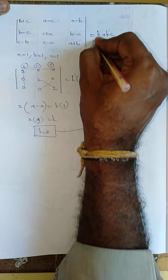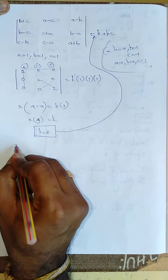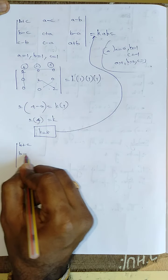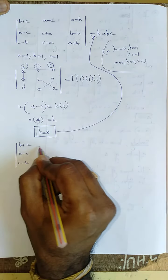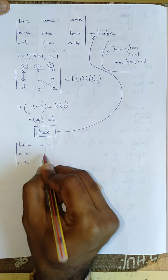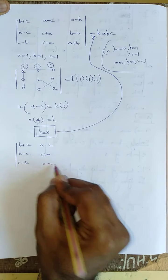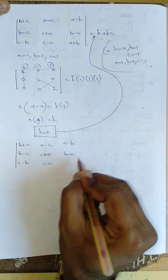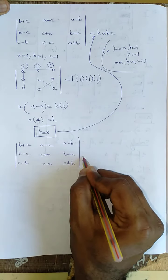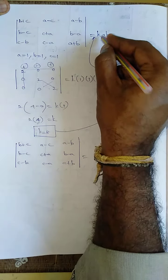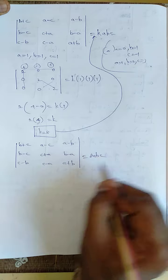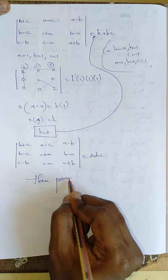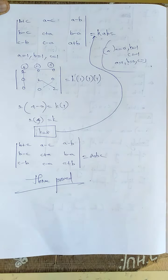Now apply k equal to 8. Therefore the determinant of (b+c, b-c, c-b / a-c, c+a, c-a / a-b, b-a, a+b) is equal to 8abc. This is what we needed to prove. Hence proved.